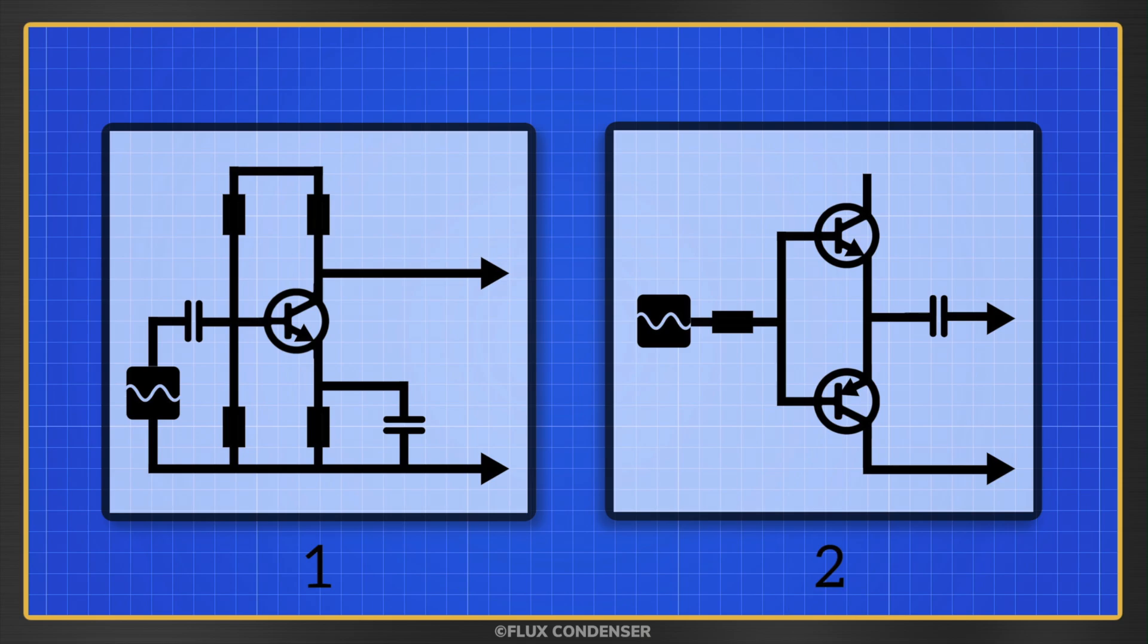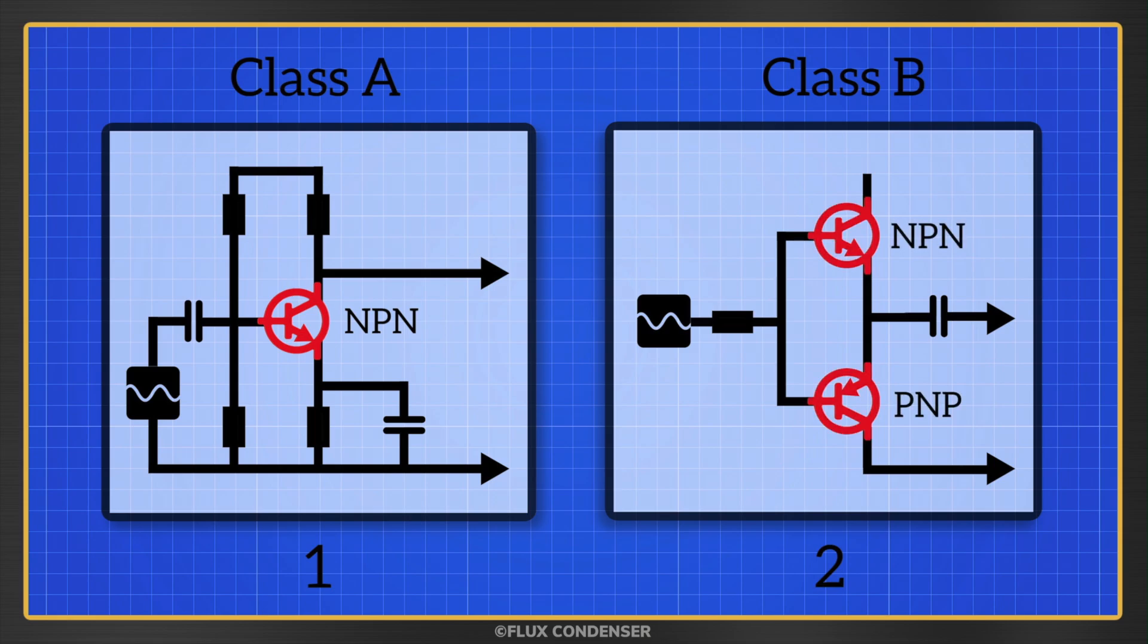If you answered one, you were correct. Class A amps are single-ended, meaning one tube or transistor at the final stage. Notice there's a single NPN transistor on the class A amp, but one NPN and one PNP on the class B. In a class A amp, the NPN transistor is always on and it reproduces the positive and negative portions of the audio signal.